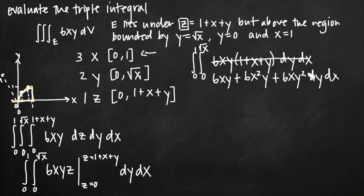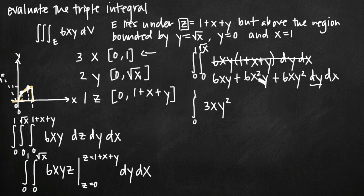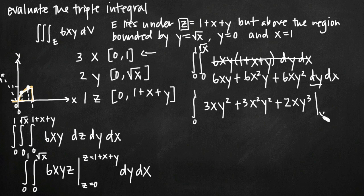Now we integrate with respect to y. Integrating 6xy with respect to y: add 1 to the exponent and divide by the new exponent, giving 3xy². For 6x²y, we get 3x²y². For 6xy², adding 1 gives exponent 3, and dividing 6 by 3 gives 2xy³. We evaluate this on the interval y equals 0 to y equals square root of x.